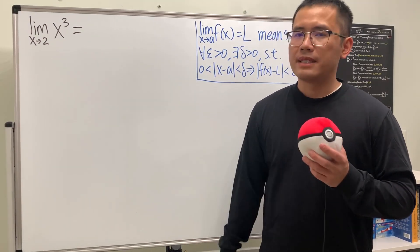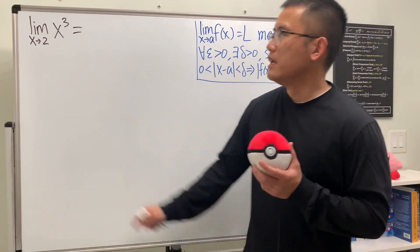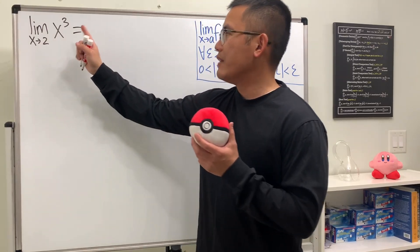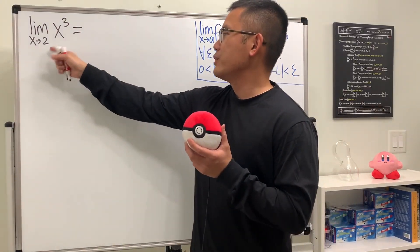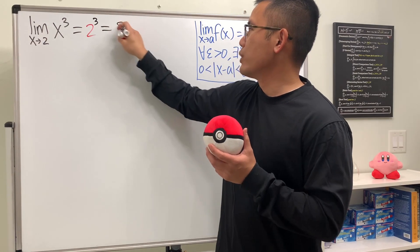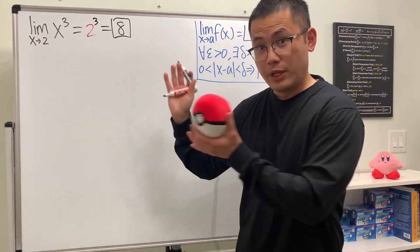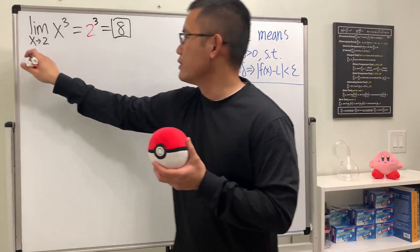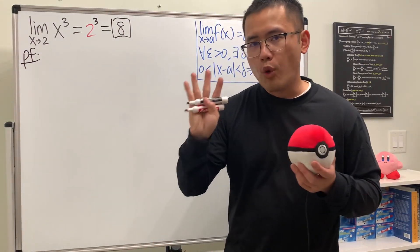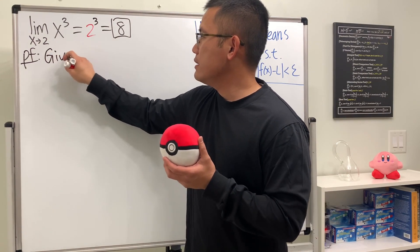Let's do two more epsilon-delta definition for proofing limits. The first one is the limit as x approaches 2 of x to the third power. We plug in 2 to get 2 cubed, which is 8. Now we are going to prove it, so first write down 'pf' and remember the four keywords, starting with 'given'.